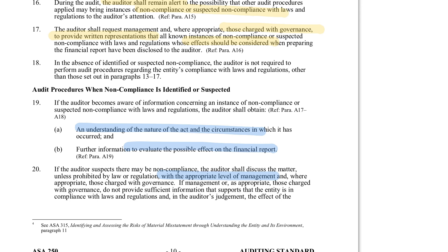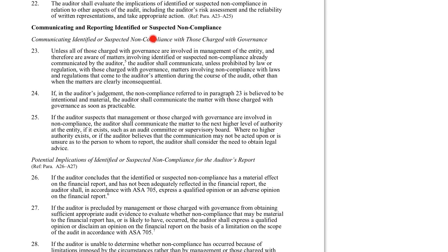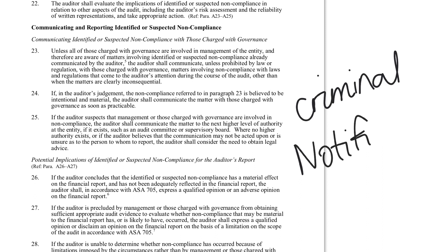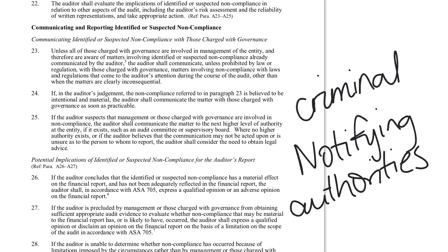If you do think the company is involved in an illegal act, you are required to notify the authorities. We should always talk to those charged with governance first and consider any implications for the audit report. But if it is a criminal act, we do need to think about notifying the authorities — because if we don't, there is the potential that the auditor may be obstructing justice and helping the client hide or obfuscate from law enforcement. So it's important that in this situation we seek our own legal advice.